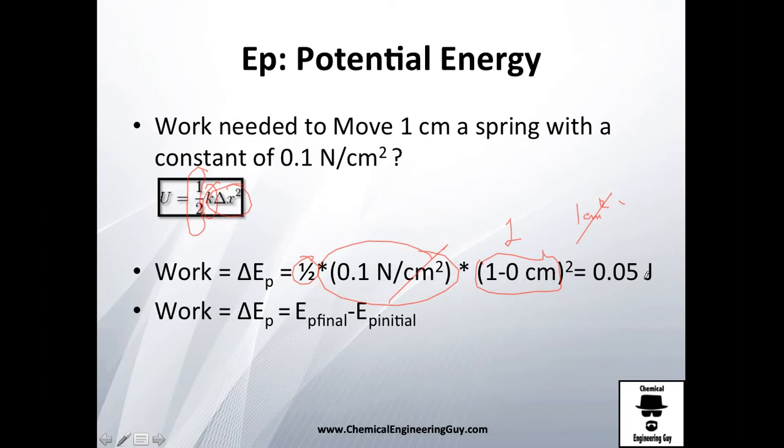The k is the constant, 0.1 newton per square centimeter, and the change on displacement to the square. The change in displacement is 1 to the square, which will give you 1 square centimeter, and this will cancel with this, and you will be left with newton centimeter.